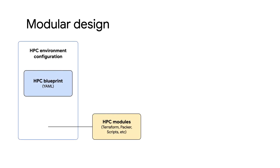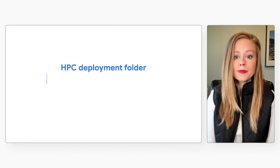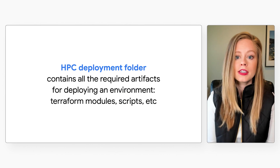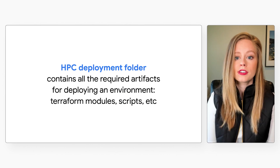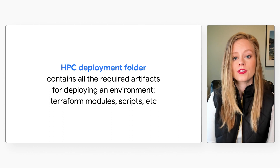To actually run the HPC Toolkit, we use the GHPC Engine to convert a blueprint to a deployment folder, which can then be deployed onto Google Cloud. Once deployed, you can then easily add on monitoring and analytics to know exactly how your cluster or system is performing. The deployment folder will contain all of the underlying Terraform, Packer, and scripts needed to deploy a complete HPC environment that has been wired together as described by your blueprint. It can be tracked as source code and distributed.